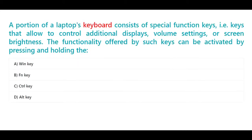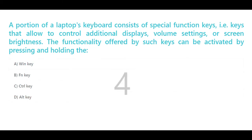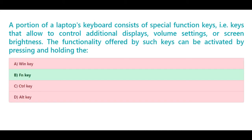A portion of a laptop's keyboard consists of special function keys — keys that allow you to control additional displays, volume settings, or screen brightness. The functionality offered by such keys can be activated by pressing and holding the: A. Win key. B. Fn key. C. Control key. D. Alt key. The correct answer is B. Fn key.